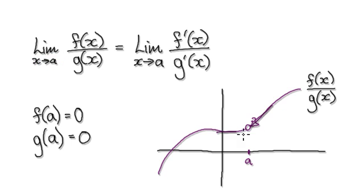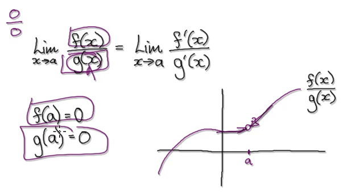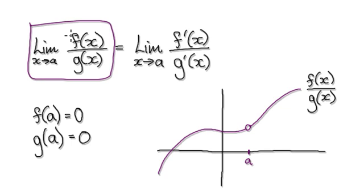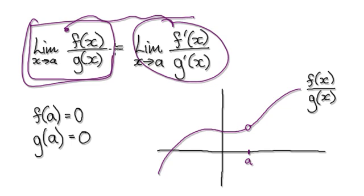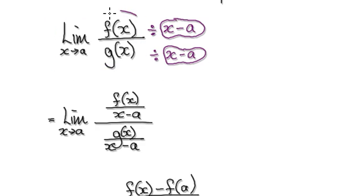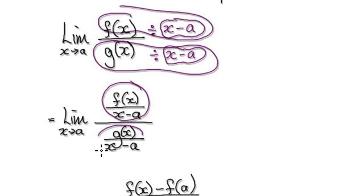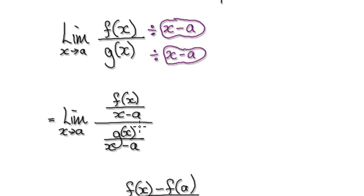So we are trying to find out the limit of this. For you to have a scenario of 0 over 0, it would mean that F of A is 0 and G of A is 0. So starting from here, here you've got a fraction. With a fraction, you can divide top and bottom by the same thing. Here we're going to divide top and bottom by x minus A. So this thing here will give us this, and this thing here will give us this — we are dividing top and bottom by the same thing.